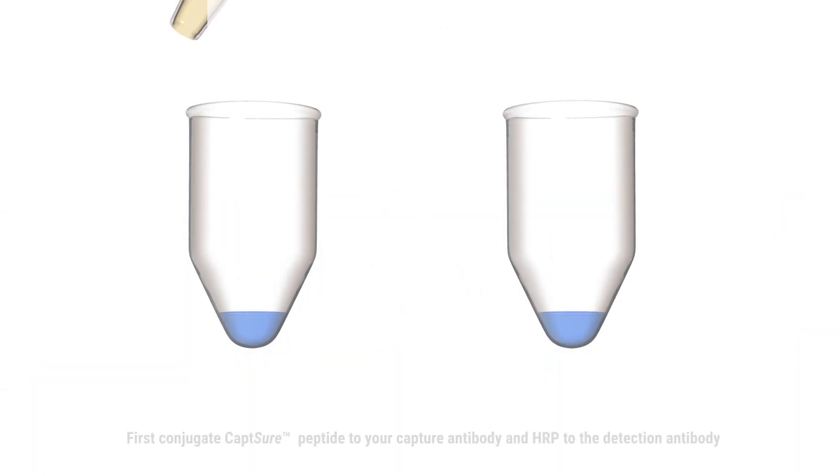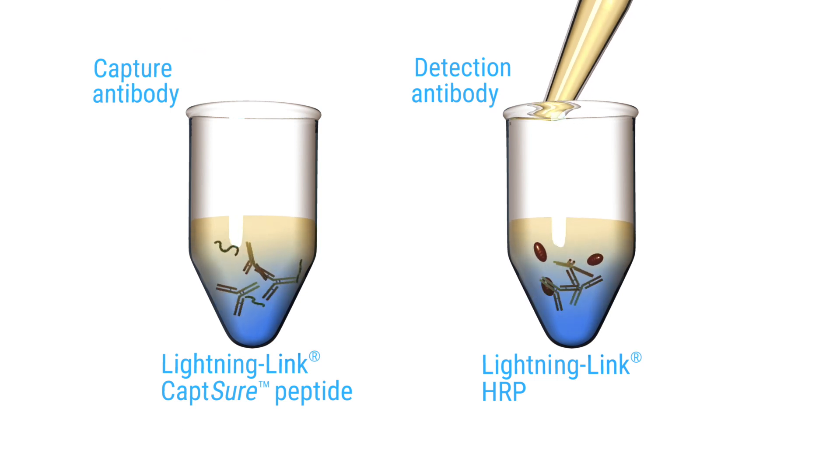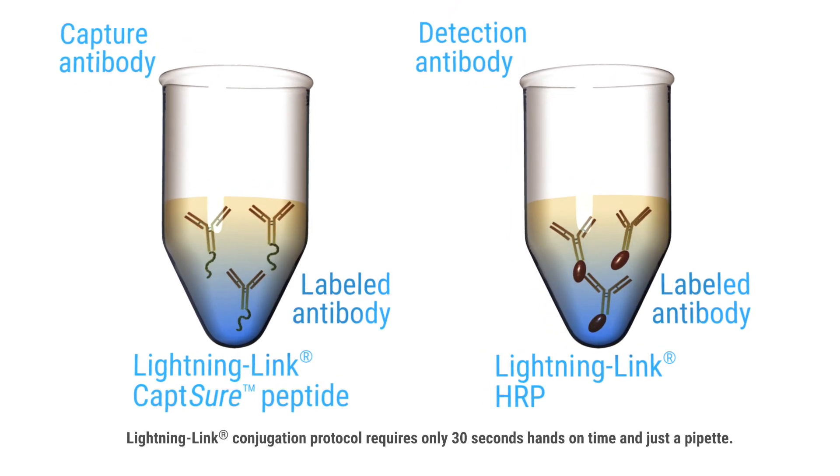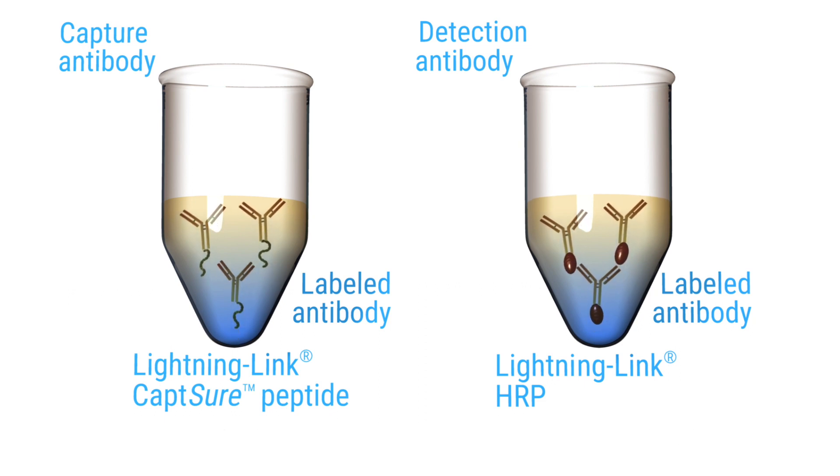First, conjugate the Capture peptide to your Capture antibody and HRP to the detection antibody using our Lightning Link conjugation protocol provided within the kit, which requires only 30 seconds hands-on time for each conjugation and just a pipette.